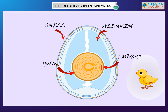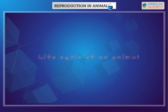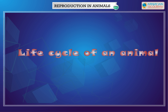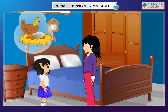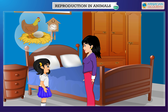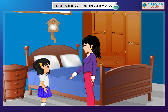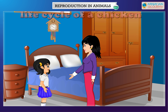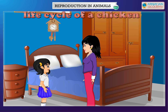The embryo develops into a chick. The various stages of development starting from an embryo to a mature adult is called the life cycle of an animal. We all know birds make nests. The bird lays her eggs in the nest to keep them safe and warm. Let us take an example of a chicken.